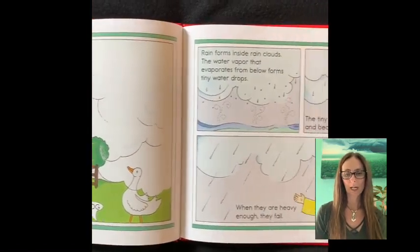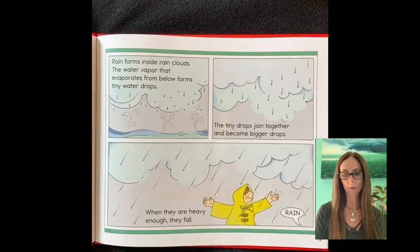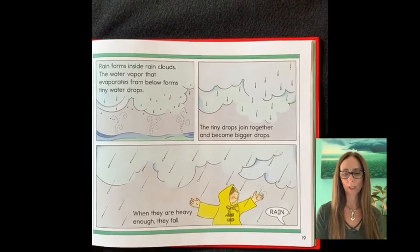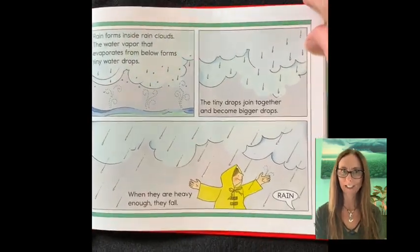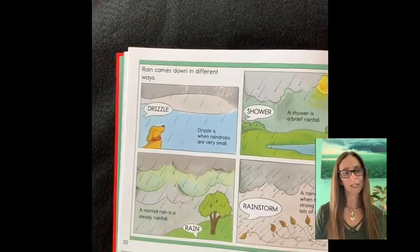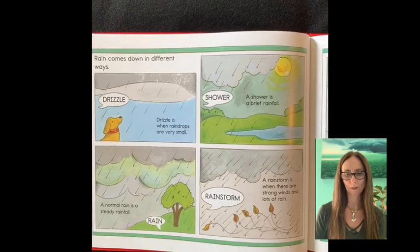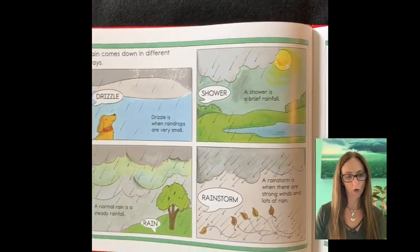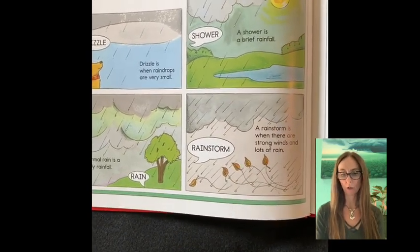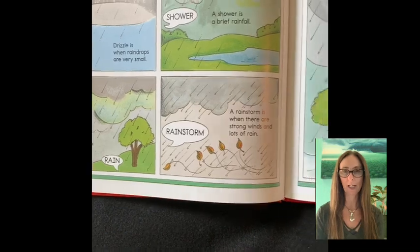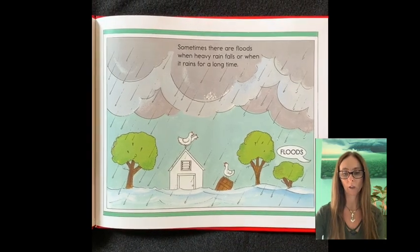Rain forms inside rain clouds. The water vapor that evaporates from below forms tiny water drops. The tiny drops join together and become bigger drops. When they're heavy enough they fall. Rain comes down in different ways. Drizzle is when raindrops are very small. A shower is a brief rainfall. A normal rain is a steady rainfall. A rainstorm is when there are strong winds and lots of rain. Sometimes there are floods when heavy rain falls or when it rains for a very long time.